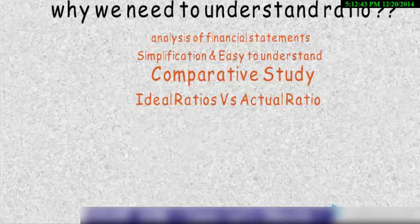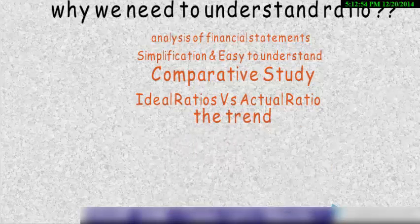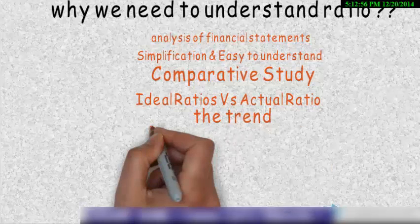Now the other is ideal ratio versus actual ratio. This helps us in finding the variance by comparing the standard and the actual ratio. The other comes the trend which helps us in evaluating the company's past performance.